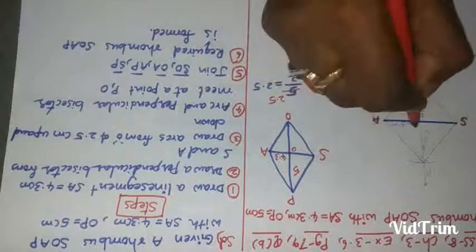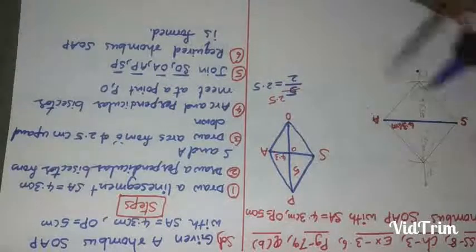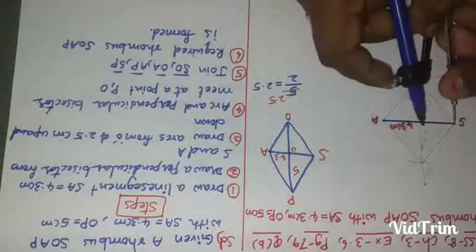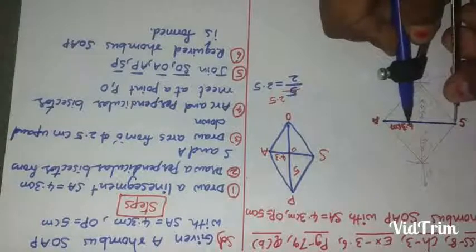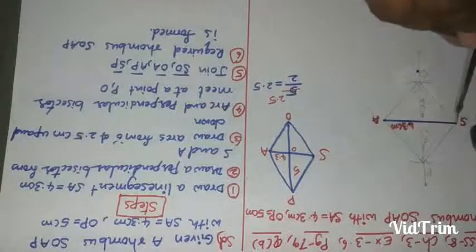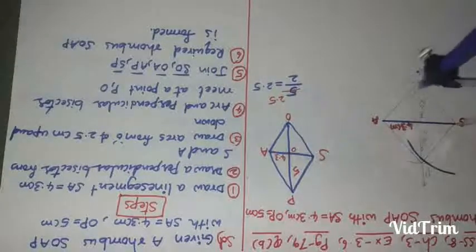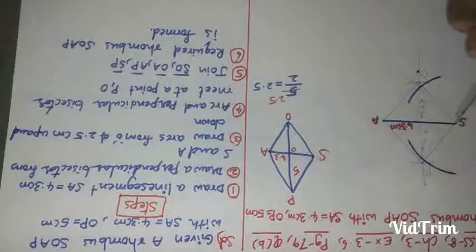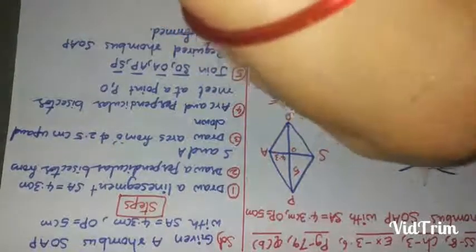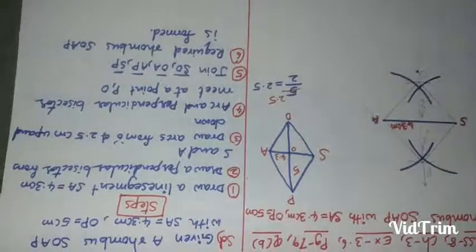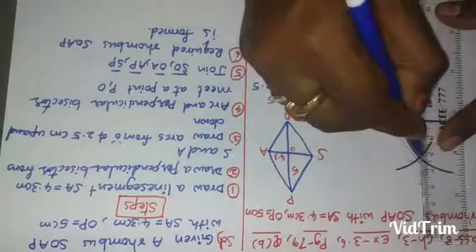Next we should draw perpendicular bisector. Take more than half of the radius, mark arcs up and down. From here also mark arcs. Now let us draw a perpendicular bisector by joining.